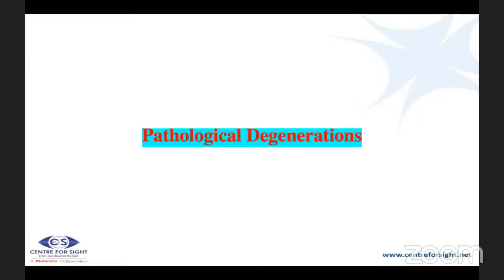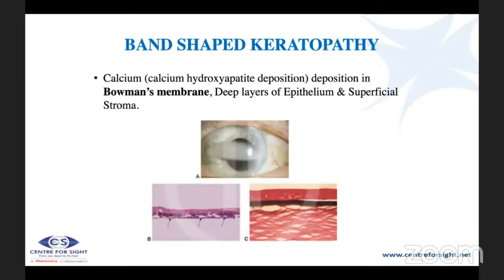Now let's come to pathological degenerations. Senile degenerations are usually benign, visually insignificant, and require no treatment — only conservative management. But when pathological degenerations enter the picture, patients are usually very symptomatic and need treatment. The first is band-shaped keratopathy, which involves deposition of calcium hydroxyapatite, always at Bowman's level, deep layer of epithelium, and superficial stroma.